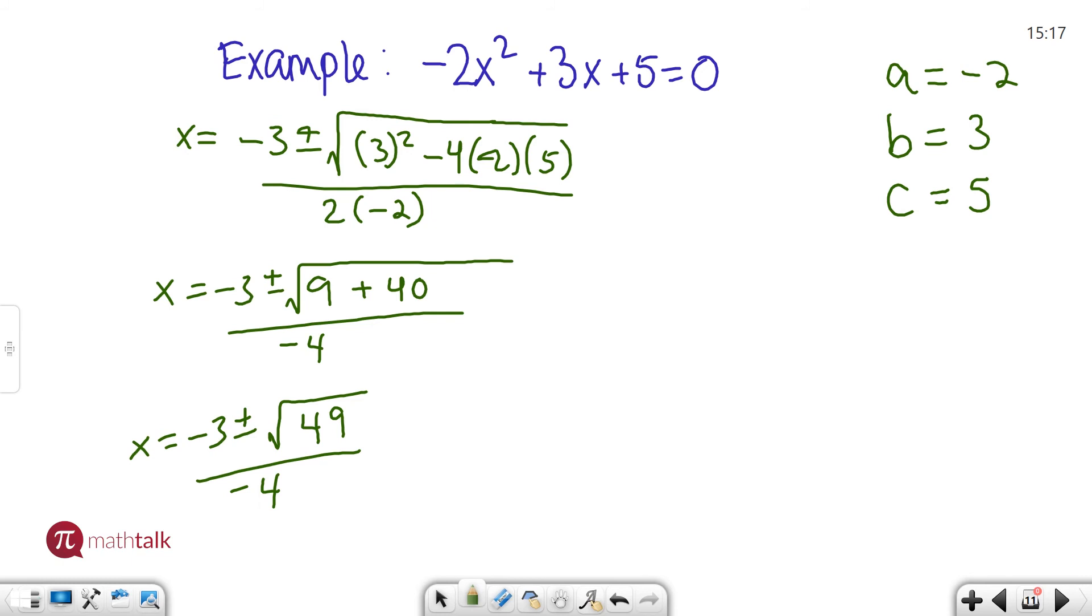I'm going to go up to the next column. So x equals negative 3 plus or minus. Square root of 49 is 7. All over negative 4.